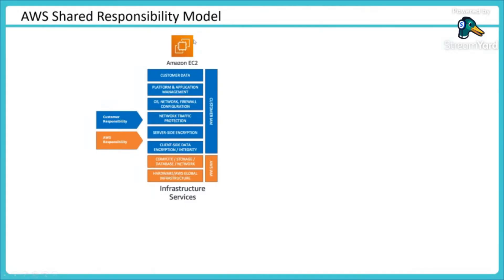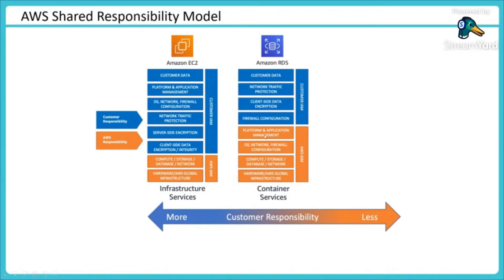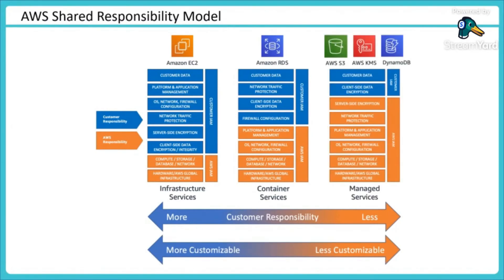For infrastructure services like Amazon EC2, AWS gives you the infrastructure and you take care of server-side encryption, network traffic protection, and which ports are open. For containers, AWS takes care of the operating system, networking, and firewall. When using RDS, AWS handles OS patching and you just focus on firewall and authentication. For services like AWS KMS or Amazon S3, AWS handles all the basic infrastructure — it depends on how you are utilizing the service.